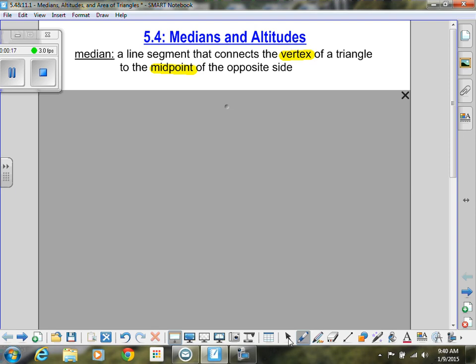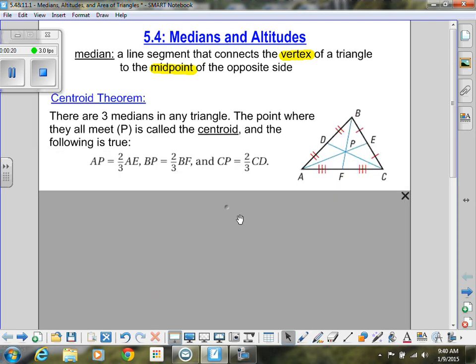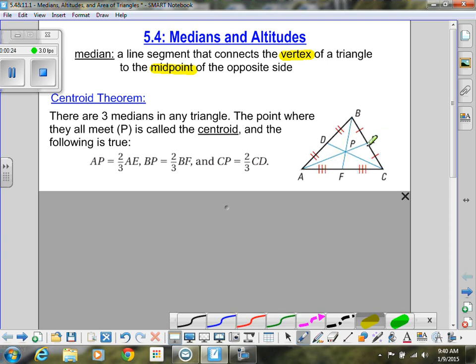So let's take a look at what that looks like. So here in this diagram, if we were to highlight a median, EA would be a median. And notice it connects the vertex A to the midpoint E on the opposite side.